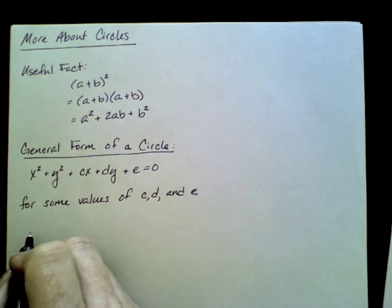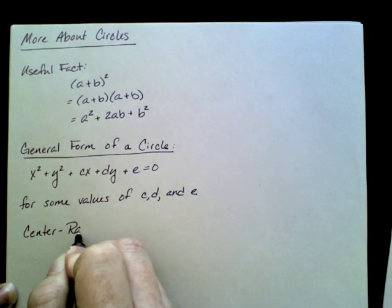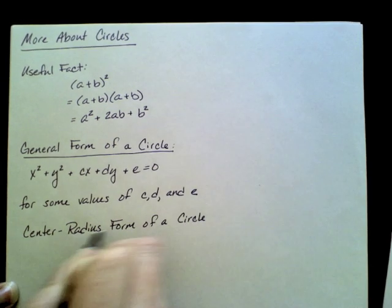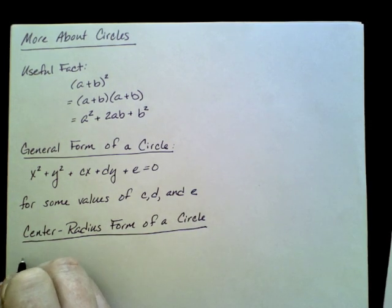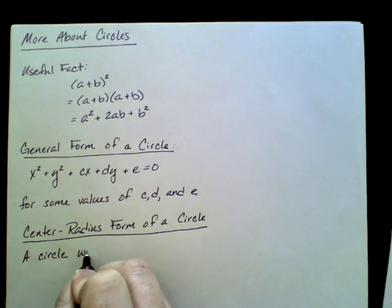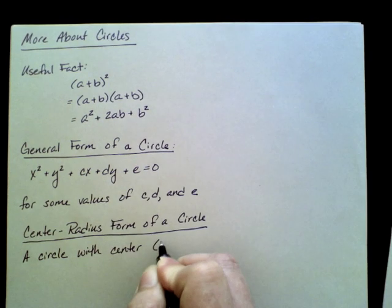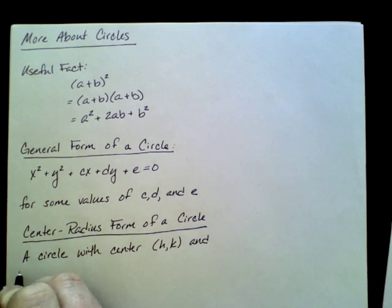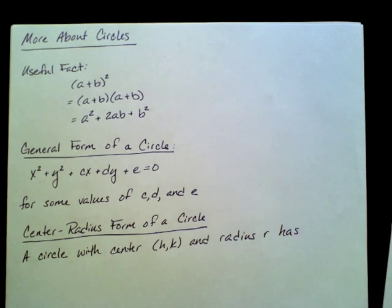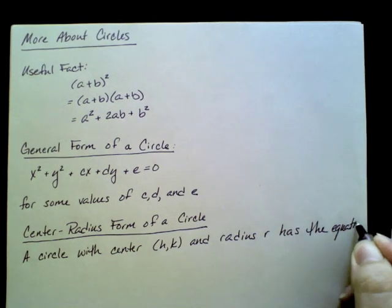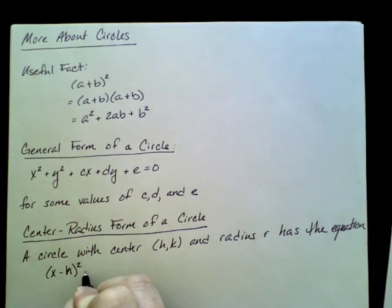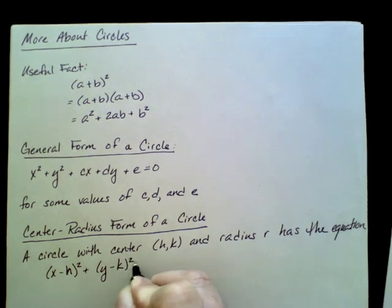We also have center-radius form of a circle. It's a different form of equation. It's called center-radius form because the equation is related to those features of the graph. A circle with center (h,k) and radius r has the equation (x-h) squared plus (y-k) squared equals r squared.